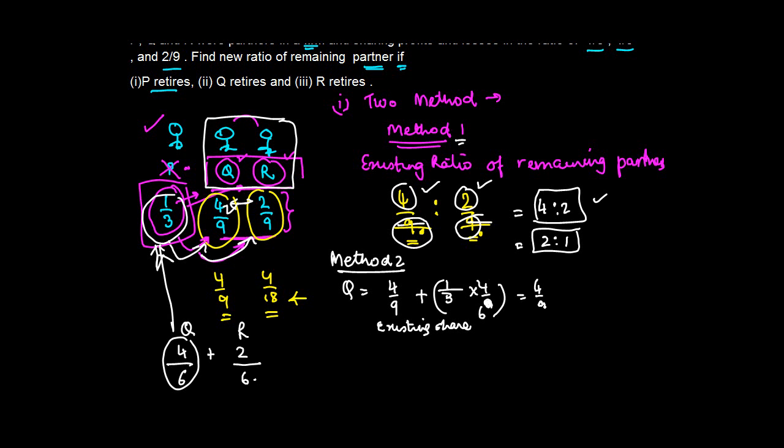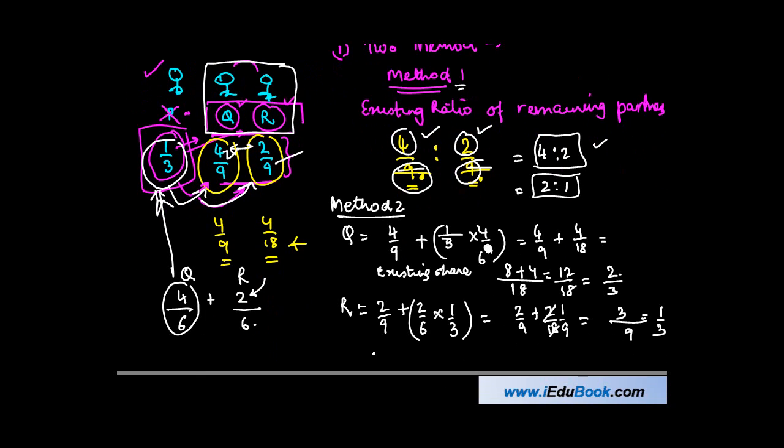Q gets 4/9 + 4/18, which is 8/18 + 4/18 = 12/18 or 2/3. Similarly for R: R owns 2/9 plus he gets 2/6 of what belonged to P, which is 2/6 × 1/3 = 2/18 or 1/9. So 2/9 + 1/9 = 3/9 or 1/3. If you now see the ratio between these two, 2/3 : 1/3 is 2:1, which is the same ratio we got through the other method.